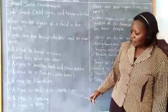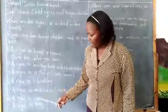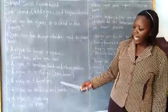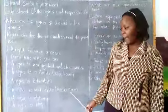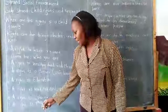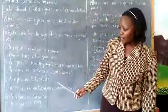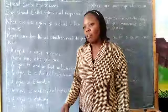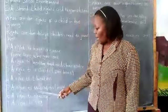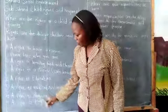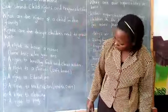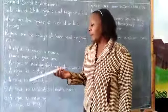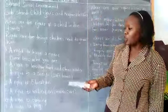We also have a right to medication. When one gets sick, you have to be taken to hospital to get medication — that is a right to healthcare. We also have a right to clothing; our parents must provide good, warm clothes. And we also have a right to play — we have to be given permission to play and given materials to play.